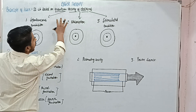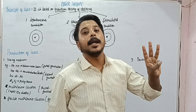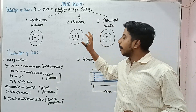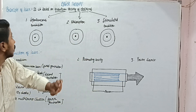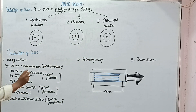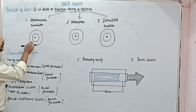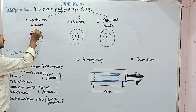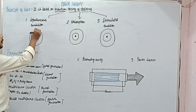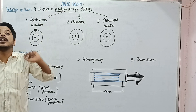Under the principle of laser, we can say that it is based on the quantum theory of electrons and three main processes are involved. The first is spontaneous emission. You can see that this is an atom — this is the nucleus and these are the energy levels where electrons reside. Now there is one electron which is in the higher energy level.